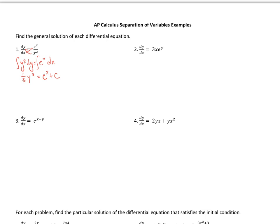Now we can solve for y. Multiply everything by 3 to get y cubed equals 3e to the x plus 3c. You can relabel 3c as c1 since it's still just a constant. Taking the cube root gives y equals the cube root of 3e to the x plus c1. Just indicate that you used a different constant to account for both sides.